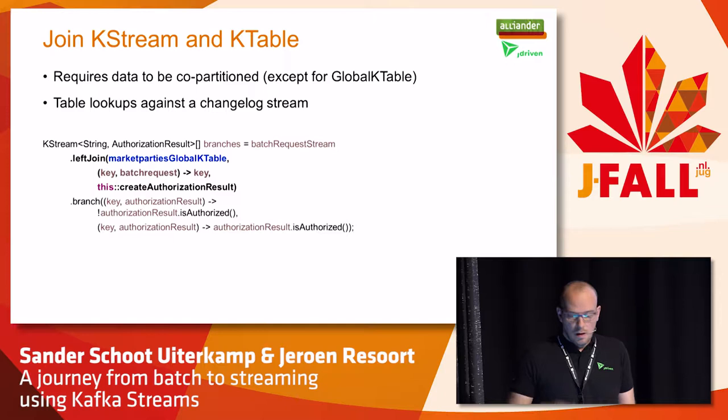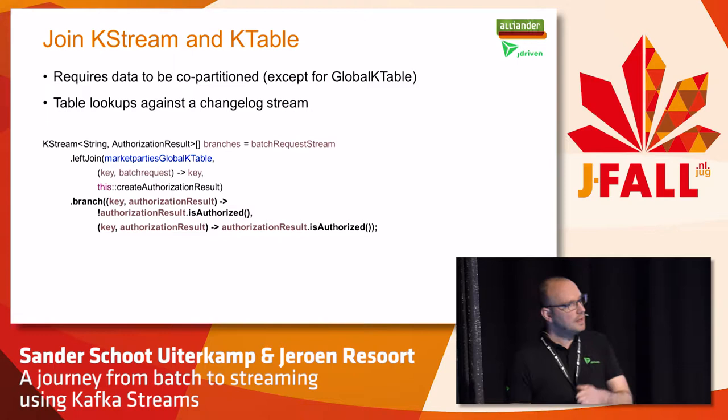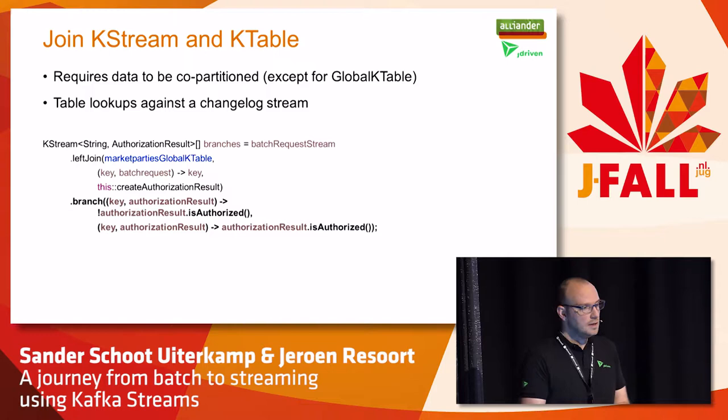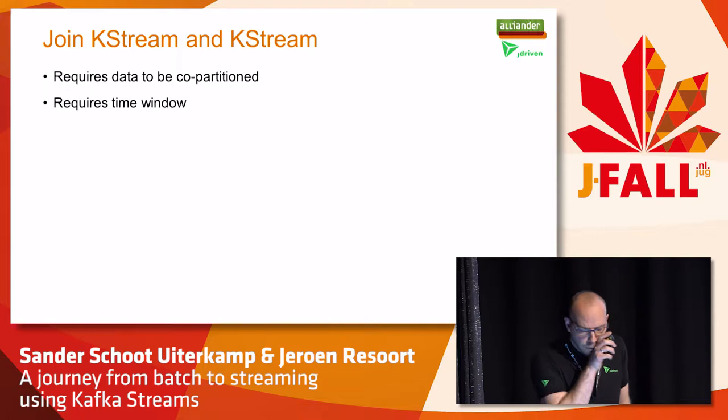You could filter out the unauthorized requests. You could also do a branch — splitting the authorized and non-authorized requests — and that way you get an array of streams. The first instance in the array is the authorized request and the second is the non-authorized request, and you handle them differently.